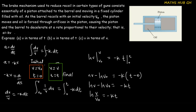We want to make v the subject, so we exponentiate both sides. This gives v over v-naught equals e to the power minus kt. Moving v-naught to the right side gives us v equals v-naught times e to the power minus kt. This is the answer for part (a).